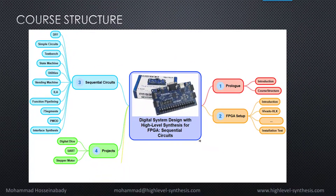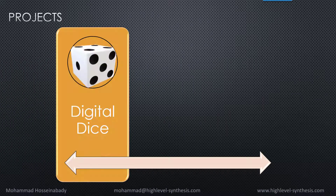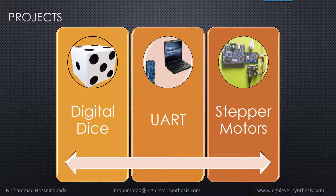The course parts are designed to cover all classical concepts and techniques in sequential logic design for FPGA implementation. The first project implements a digital dice circuit, and the corresponding section will explain two different techniques to generate a random number in hardware. The second project implements UART modules to exchange data serially between the Basys 3 board and a computer. The last project designs a logic controller to control the rotation of a stepper motor.